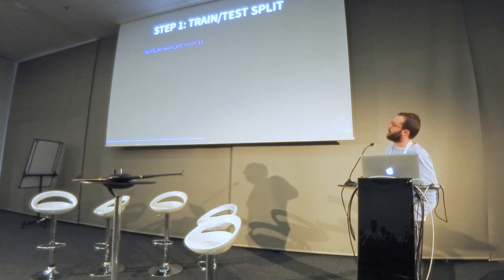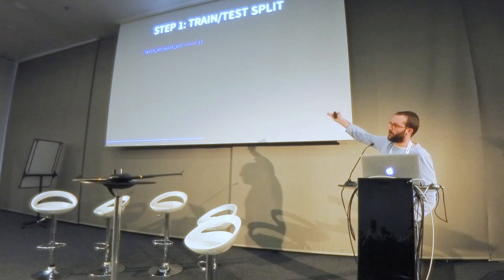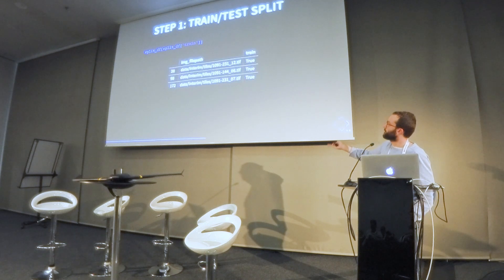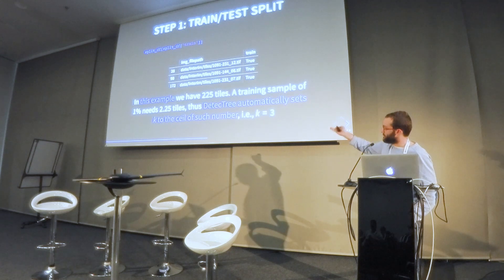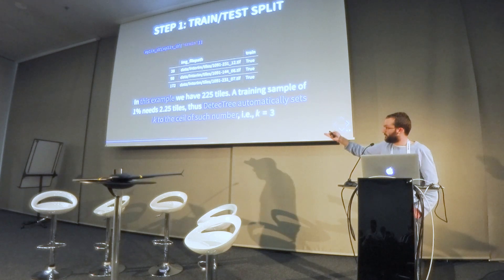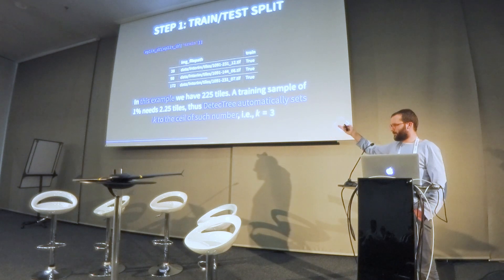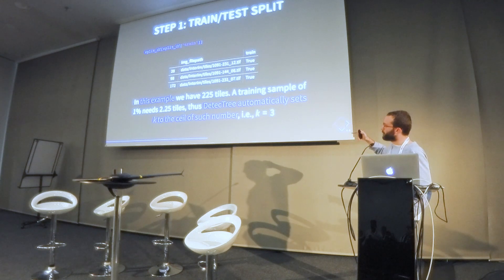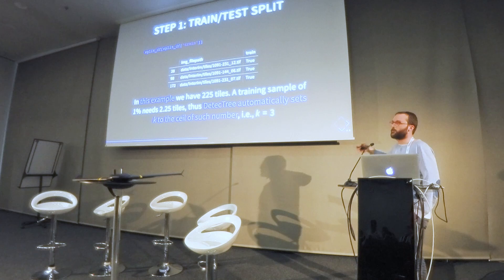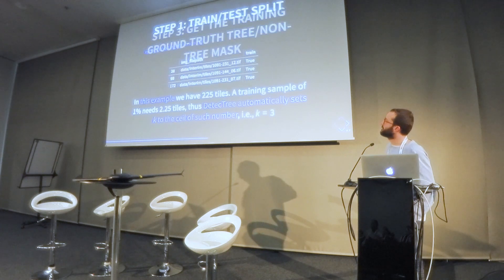If I just want to see which tiles have to be included in training, in this case we would have these three tiles. In this example we had 225 tiles, so for 1% of the data we'd need 2.25 tiles — we took three just to have a bit more.